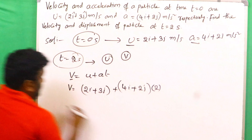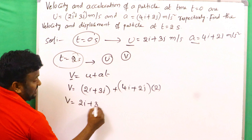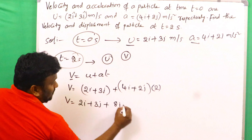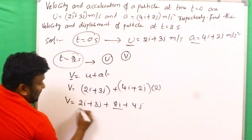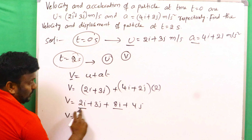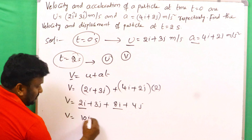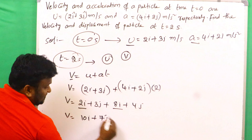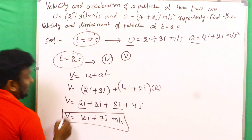Multiplying out: v equals 2i plus 3j plus 4i plus 4i plus 2i plus 4j. Combining i-components: 2i plus 8i equals 10i. Combining j-components: 3j plus 4j equals 7j. So the final velocity is v equals 10i plus 7j.